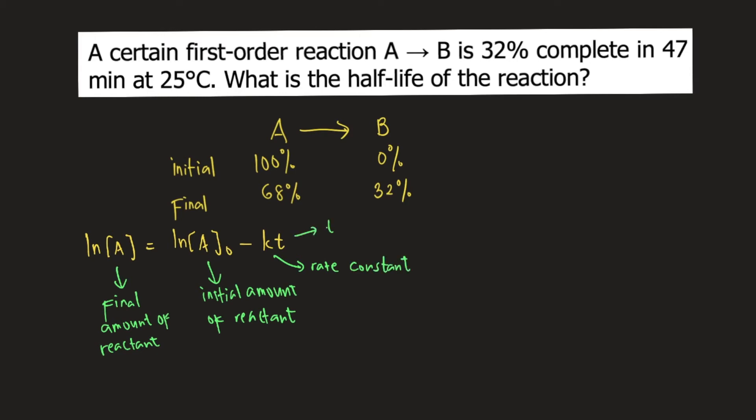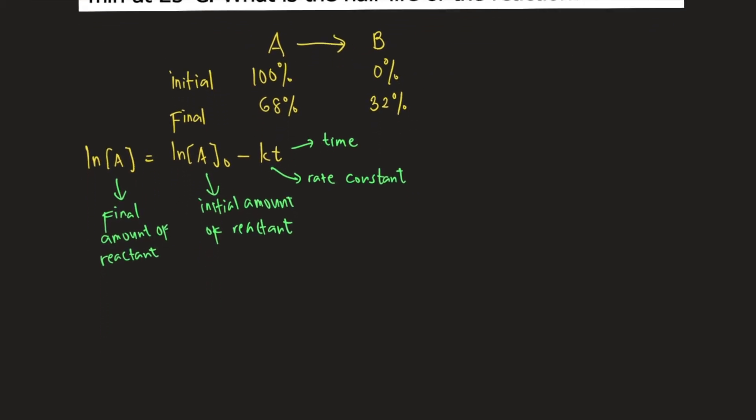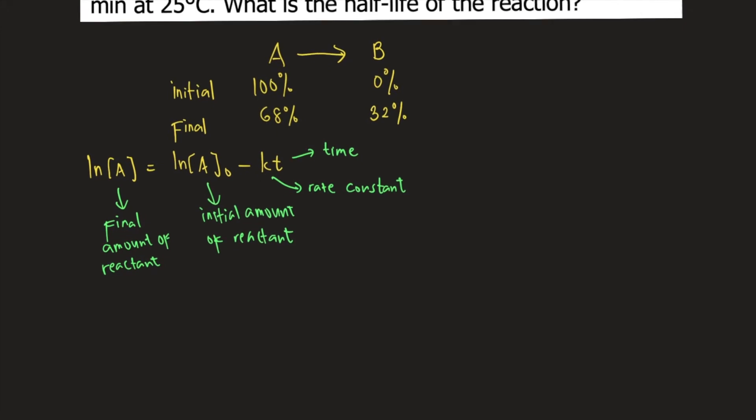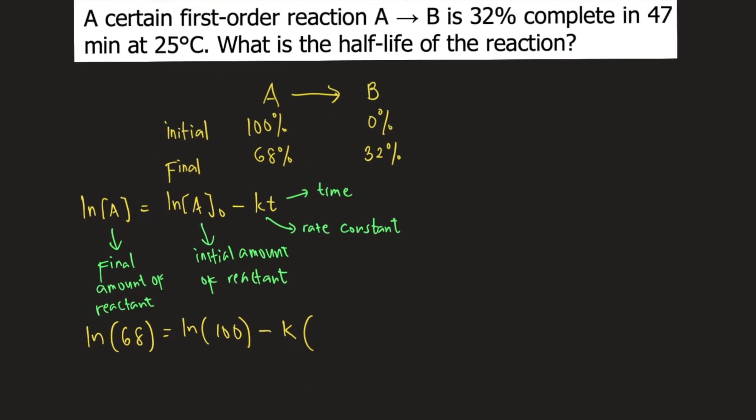We are given the final amount of the reactant, you have 68%, so that's ln of 68. Initial amount of the reactant is 100%, so that's ln of 100 minus K, we are not given the rate constant, times time. In the problem, time is given. It's 47 minutes.